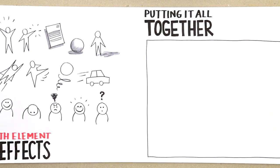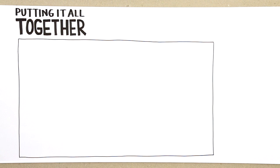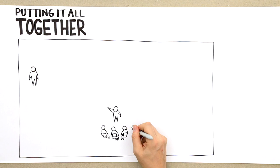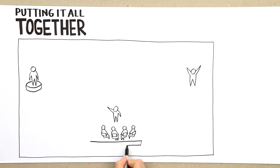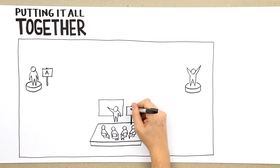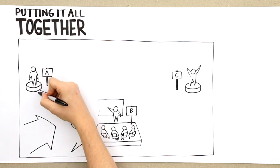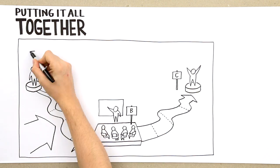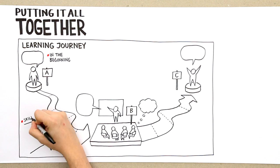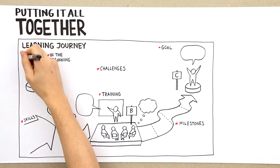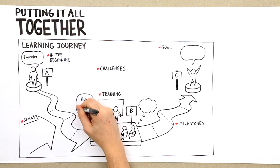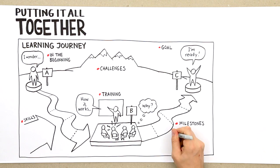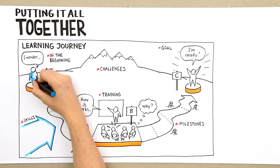Now you're ready to make the seven elements work together. First, you start by drawing the people involved. Second, you place them somewhere with platforms and signs. Thirdly, you show the process. Then you add speech bubbles and text, showing what people are thinking and or saying.